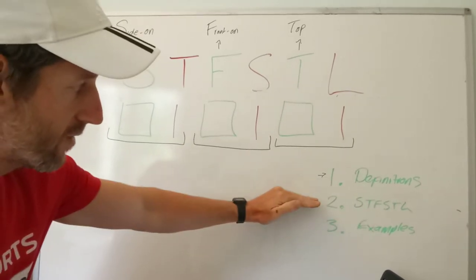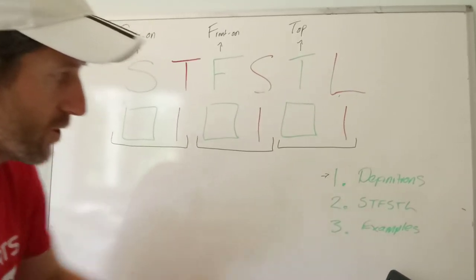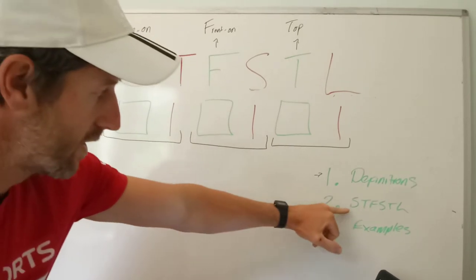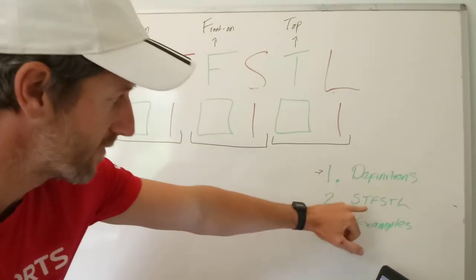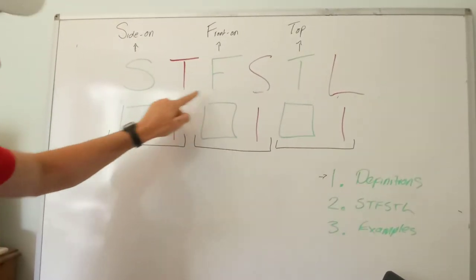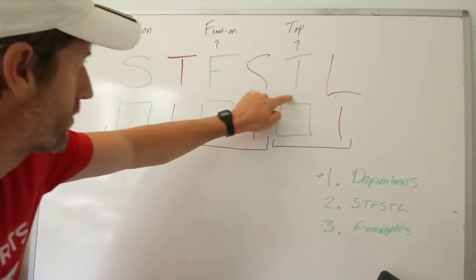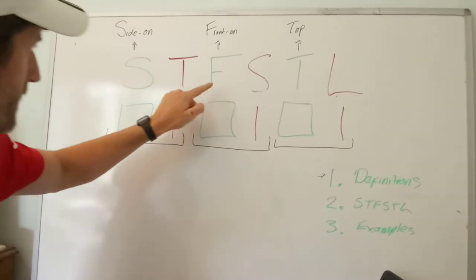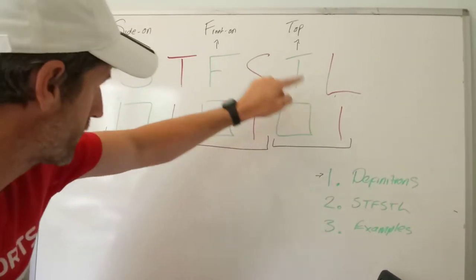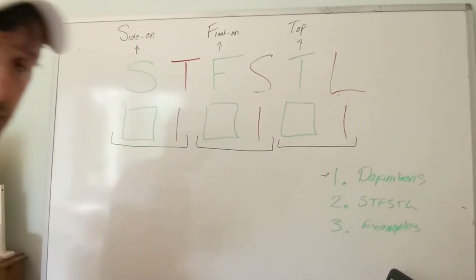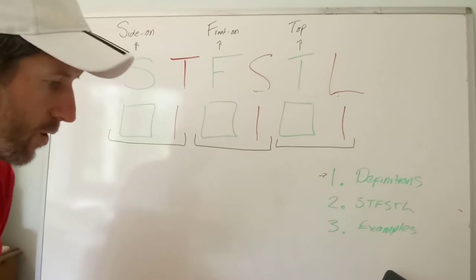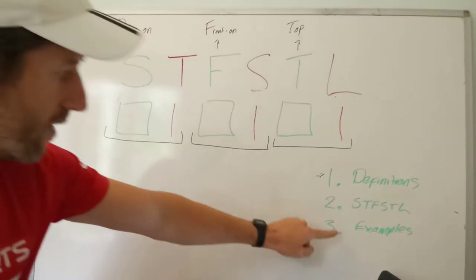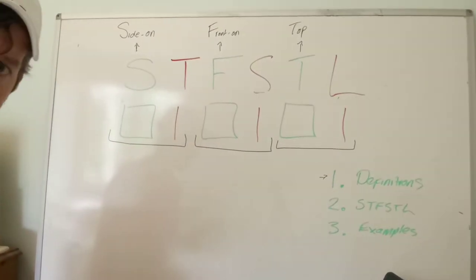We need to then try and remember which ones generally go together. So that's the mnemonic: Sophie takes Fleur shopping to London — or Simon takes Fred shopping to London — whatever way you can remember best. The last step is we have to think about examples.